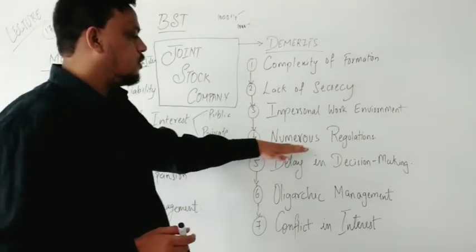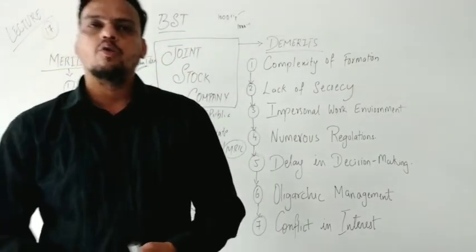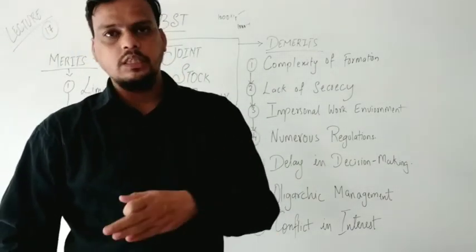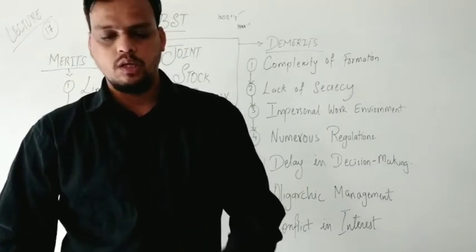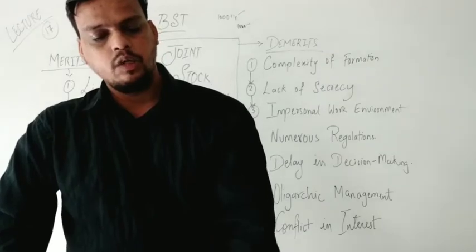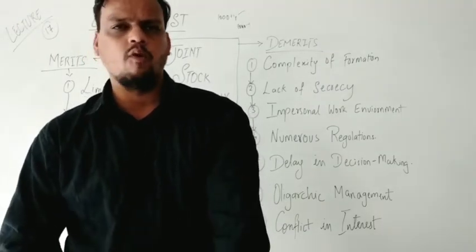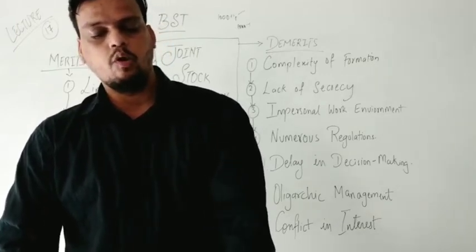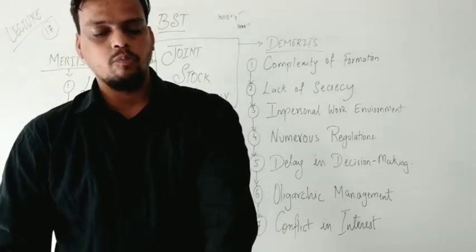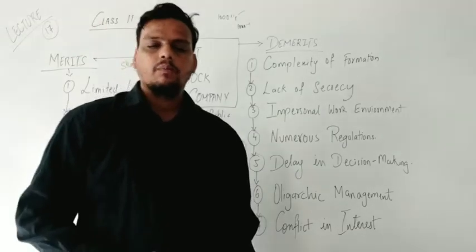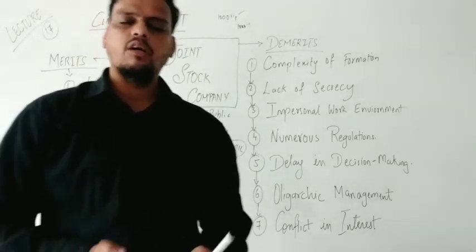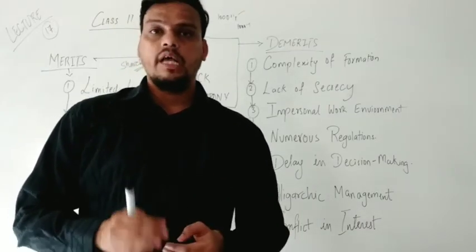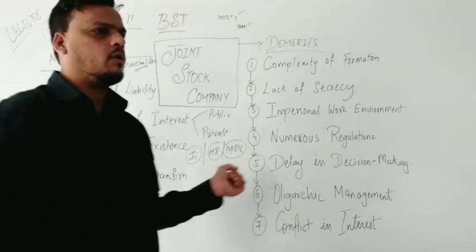Point number four is numerous regulations. There are many rules and regulations that the government prescribes. The functions of the company are subject to a large number of legal formalities. The company has a burden of numerous restrictions with respect to audit, voting, filing of reports, preparation of documentation, certificates, etc. Questions such as who can vote and who cannot, who can audit — are all governed here. These processes are very time-consuming.